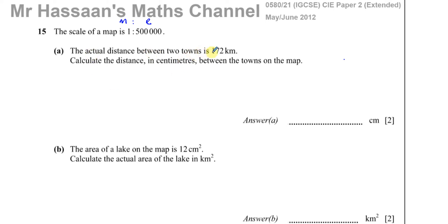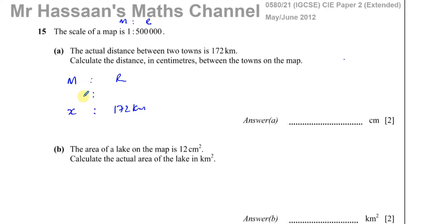It says the actual distance between two towns is 172 km. Calculate the distance in cm between the towns on the map. So if we know the map-to-real ratio, we know that the real length is 172 km, and we want to find what the distance is on the map — let's call it x. We know that the map scale is 1 to 500,000.